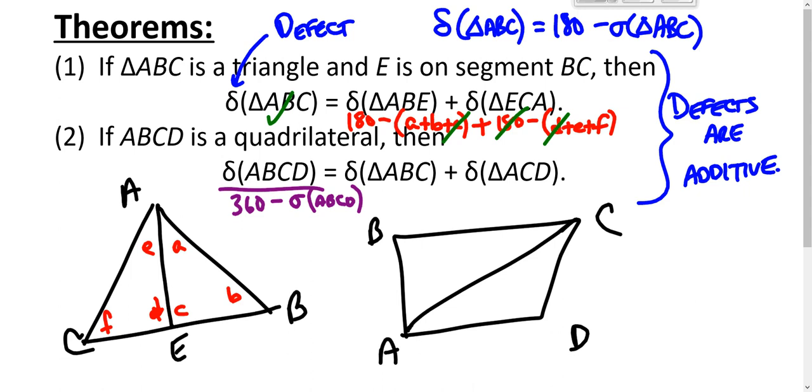So the big takeaway here is that defects are additive, and by breaking up a figure into smaller figures we can add defects, and we use that in proofs that follow. This is a nice tool to stick in your toolbox. What's up next is what happens in our geometry if a rectangle exists.